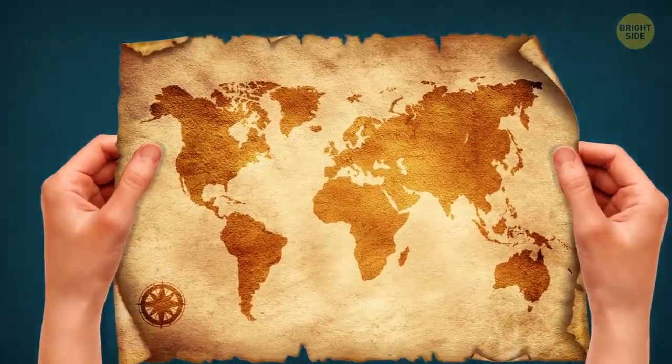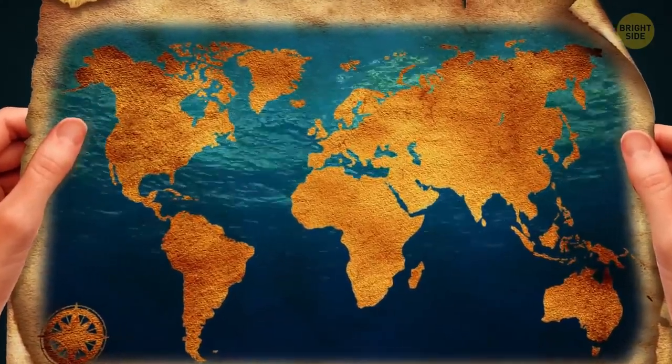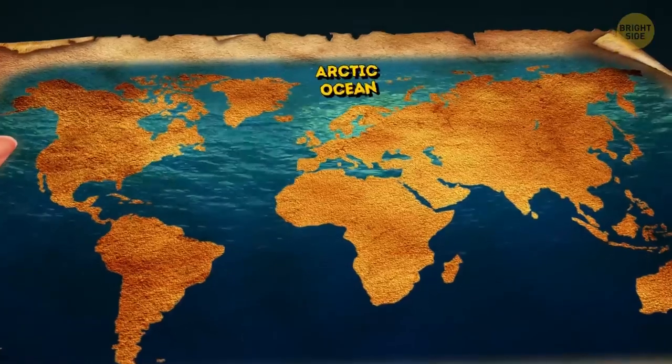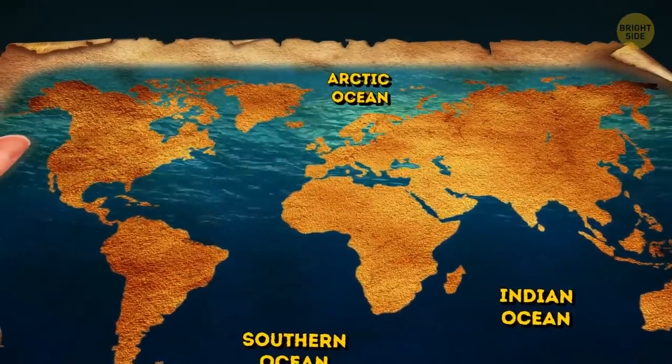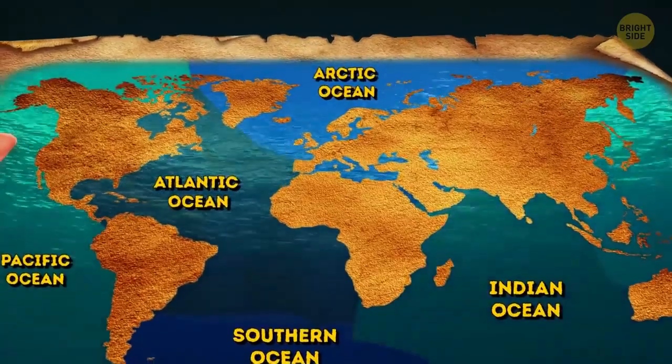So, when you look at the seas and oceans on the map, you might think that they just flow into each other. It seems like there's only one big ocean, and people just gave different names to its parts. Well, you'll be amazed how vivid the borders between them are.